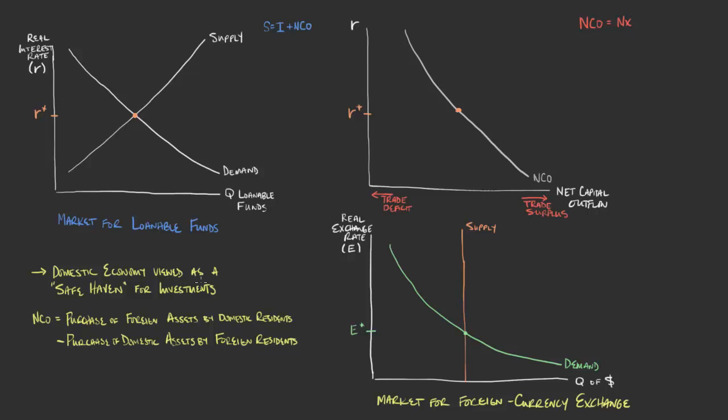And so what does that look like? A government that is seen as a safe haven, you can see it's a little counterintuitive sometimes what will happen. I've got the definition here for net capital outflow because this would again be a case where we're not talking about a change in the market for loanable funds that's driving this to start off with. We're talking about a change in the net capital outflow. If your government is seen as a safe haven, if the domestic government is seen as a safe haven, then it's seen as secure.